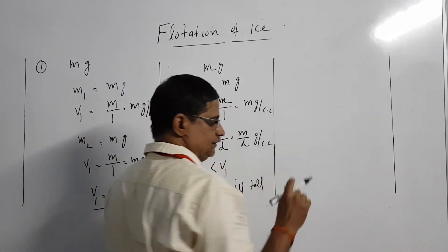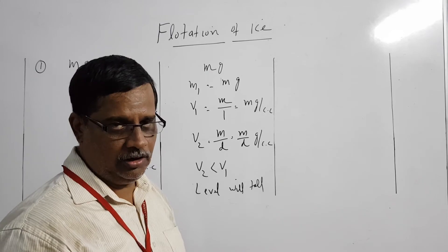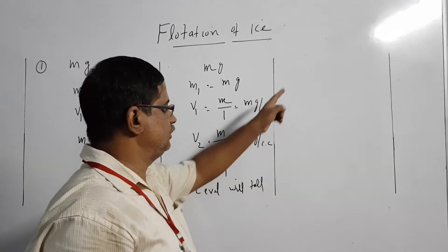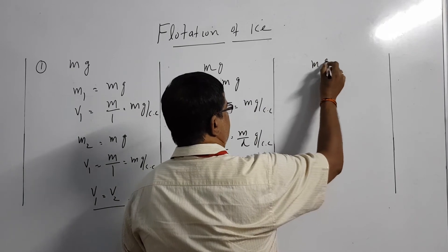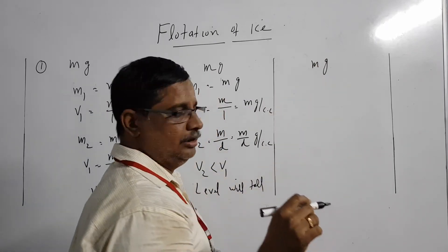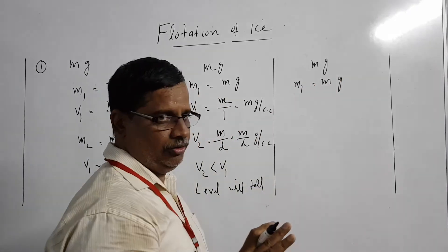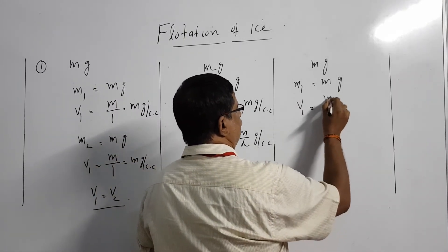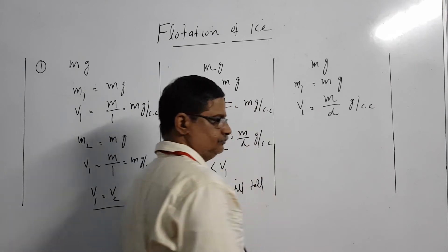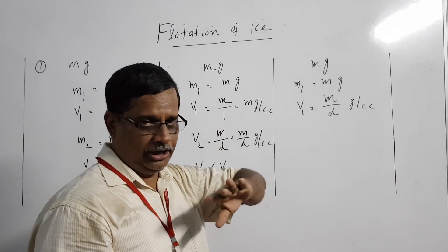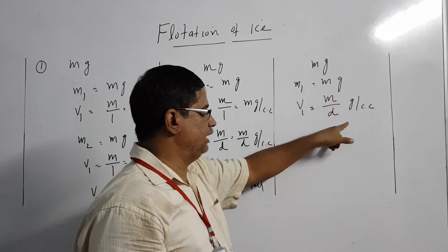Finally, let us look at the case of an ice block floating on the surface of a liquid denser than water. The mass of the ice block is m grams, so the mass of liquid displaced is also m grams by the first law of flotation. The volume of liquid displaced (V1) is mass of liquid displaced divided by density of the liquid, which equals m divided by D gram per cubic centimetre.